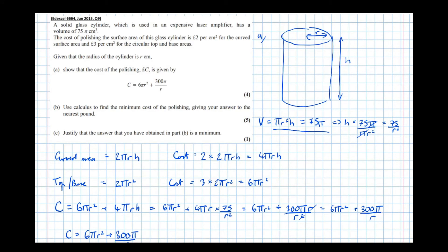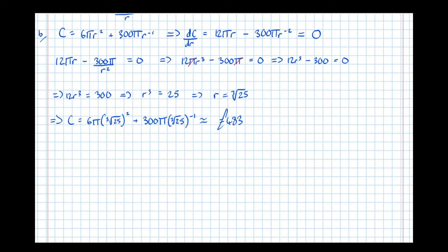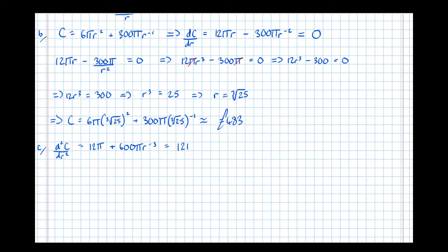Revisiting the question, we must also justify that this answer is a minimum. To do that we find the second derivative. We have the first derivative dC/dr = 12πr − 300πr⁻². Differentiating again: d²C/dr² = 12π + 600πr⁻³. We now substitute r = ∛25: d²C/dr² = 12π + 600π(∛25)⁻³.